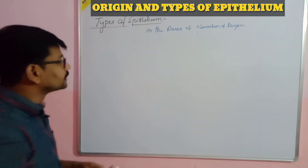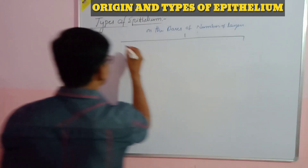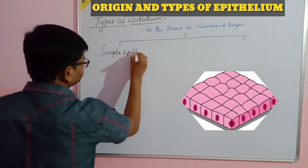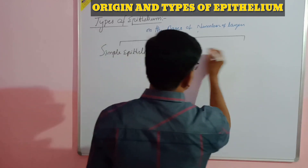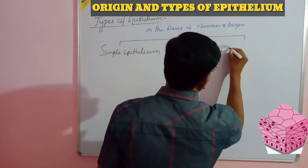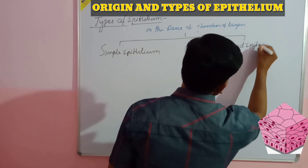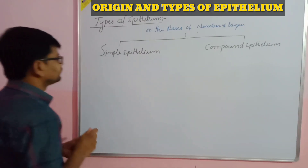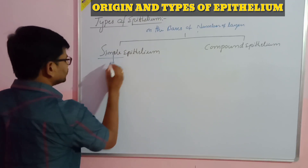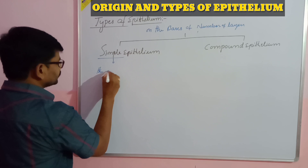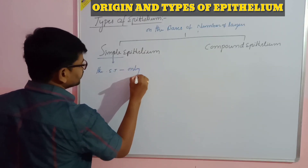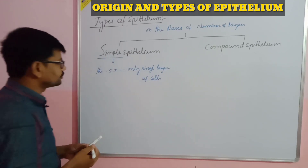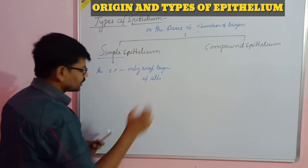On the basis of number of layers, epithelial tissues are broadly divided into two types: one is simple epithelium and the second is compound epithelium. Compound epithelium is also known as stratified epithelium. Simple epithelium is the epithelial tissue made up of only a single layer of cells.